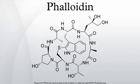Derivatives conjugated with fluorophores are sold widely. Because of its ability to selectively bind filamentous actin and not actin monomers, fluorescently labeled phalloidin is more effective than antibodies against actin.